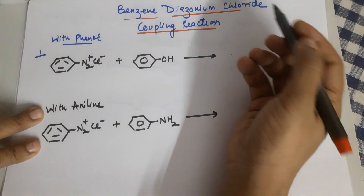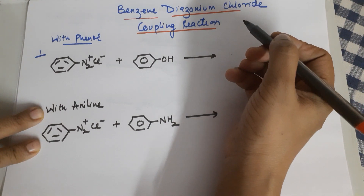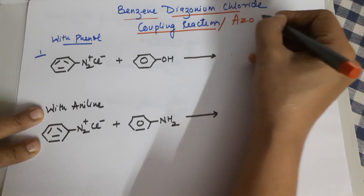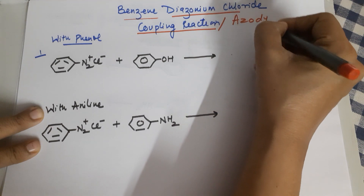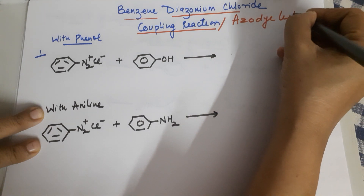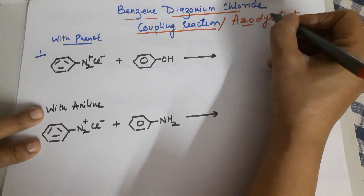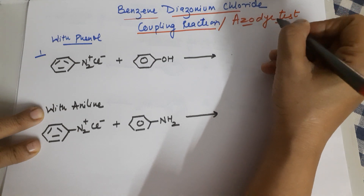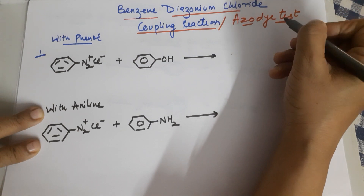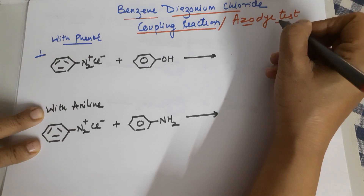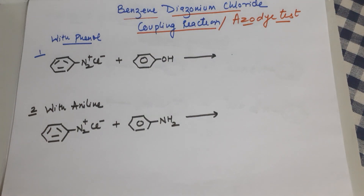Now this coupling reaction has another name known as the azo dye test. Azo and dye — dye refers to some color. So that is the importance of the reaction: the products are colored. We will come to this part a little later. Let me first finish what we mean by a coupling reaction.